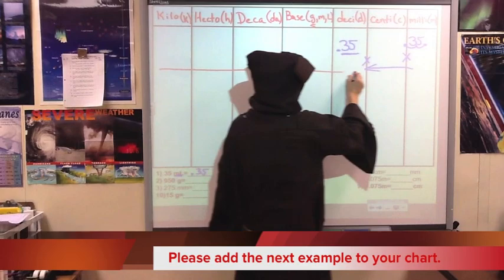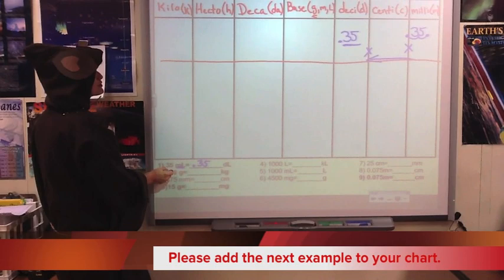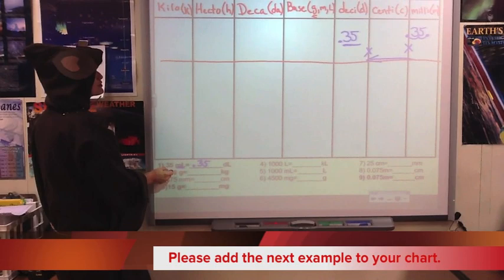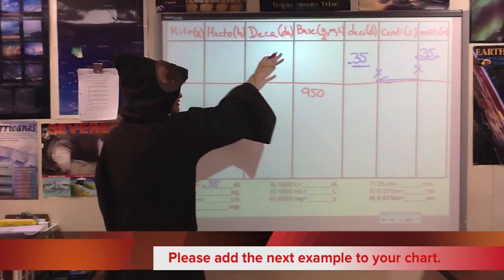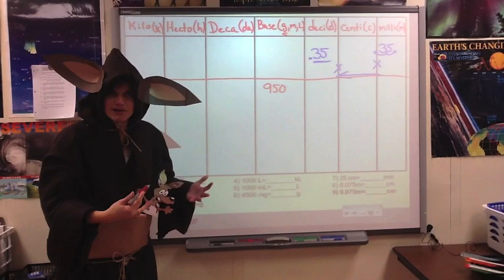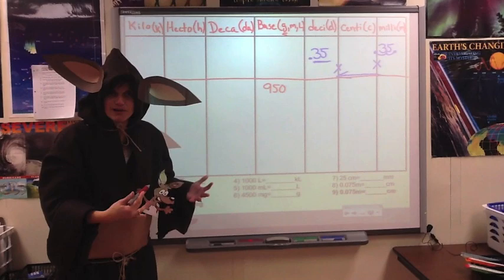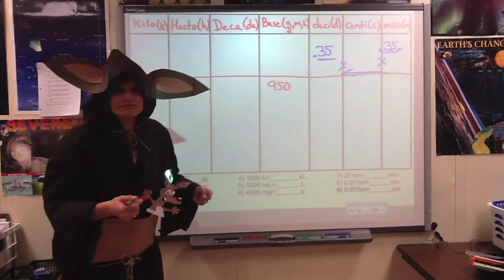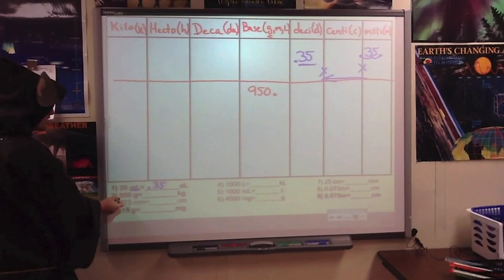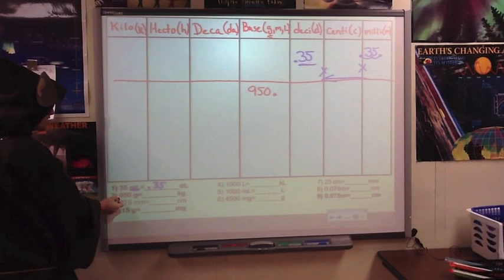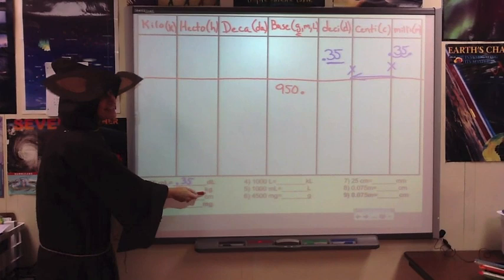So I'm going to take the number 950 and put it in the middle column of my chart — 950 grams. I'm going to leave the G out because it's already up in my column heading. Now, if you remember from our last example, where is the decimal point in this number? We don't see it, so automatically we're going to put it right back here at the end of our number. Now, we're interested in finding out what 950 grams is in kilograms. The first part of this symbol, kilo, tells us what prefix column we need to go to.